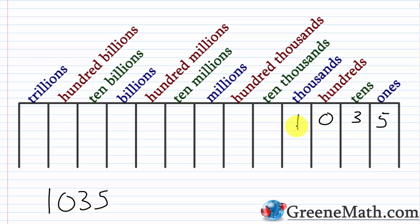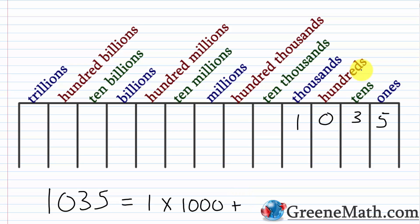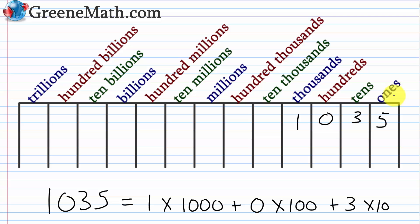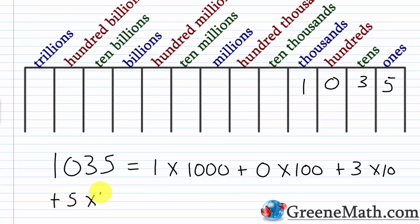All we need to do is form the sum of each digit multiplied by its corresponding place value. Starting with the 1 on the left — it's in the 1,000s place, so 1 times 1,000. Then plus, we have a 0 in the 100s place. That 0 is just a placeholder, but to illustrate expanded notation I'll include it for now, although you don't have to. So 0 times 100. Then plus, we have a 3 in the 10s place, so 3 times 10. And lastly, we have a 5 in the 1s place, so plus 5 times 1.